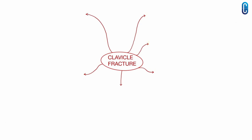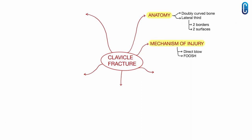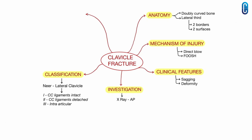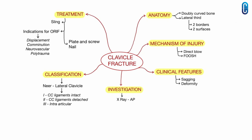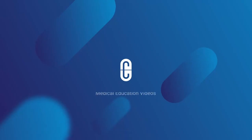Here is a recap of what we have covered in clavicle fractures. In anatomy, the clavicle is a doubly curved bone and its lateral third has two borders and two surfaces. The common mechanisms of injury are direct blow and fall on an outstretched hand. In clinical features, watch for sagging and deformity of the shoulder. The fracture is easily diagnosed by X-ray AP view of the shoulder. For the Neer classification of lateral clavicle fractures: type 1 — coracoclavicular ligaments are intact; type 2 — coracoclavicular ligaments are detached; type 3 — there is intra-articular extension. Treatment is mostly conservative with a sling. Indications for ORIF include displacement, comminution, neurovascular compromise, and associated polytrauma. The devices used are mainly plate and screw or intramedullary nail.